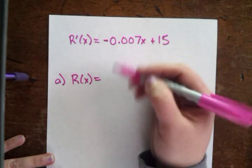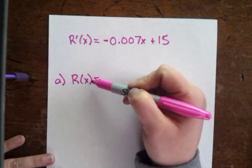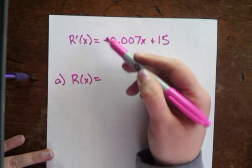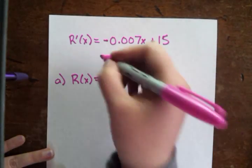Well we learned before that the marginal revenue function is just the derivative of the revenue function. So in order to go from the derivative back to the original function, we have to take an integral.